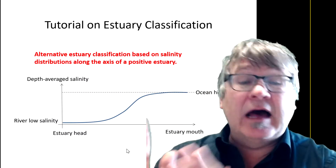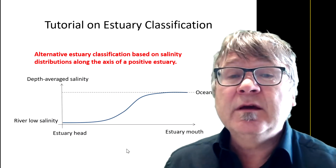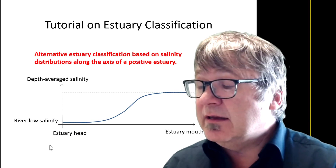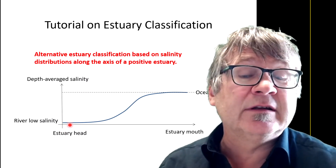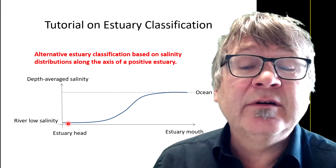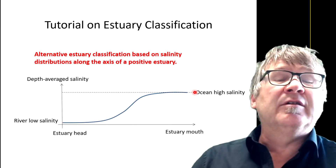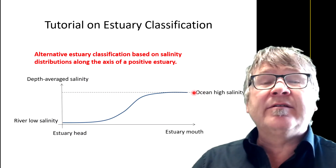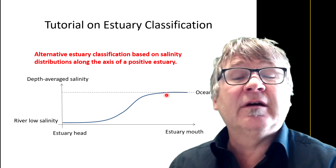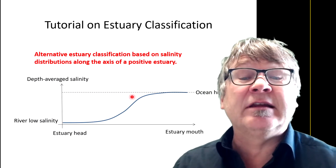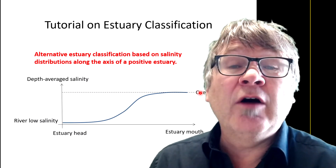Here's one example of the salinity distribution. If we have a positive estuary, we have a low salinity on one side, then a transition zone where the salinity increases, and you get a high salinity of seawater on the other side. The shape of this curve — this transition — shown here as the depth-averaged salinity, can change for different types of estuaries.